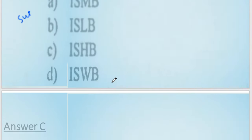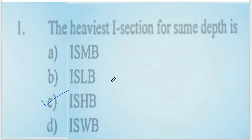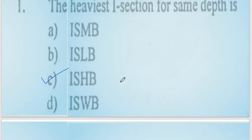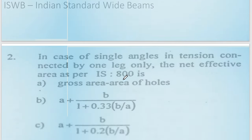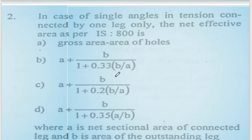ISHB is used for heavy weight. If you want to use lightweight, the answer will be ISLB.